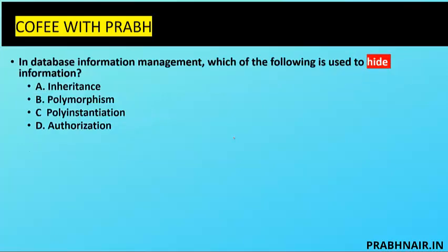Next coffee shot: in database information management, which of the following is used to hide information? Before answering, here's an exam tip: we discussed inference attack — the countermeasure for inference attack is called poly instantiation. Remember that.